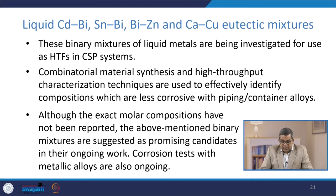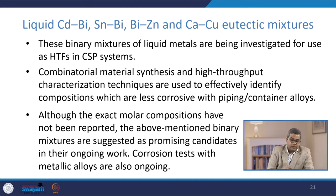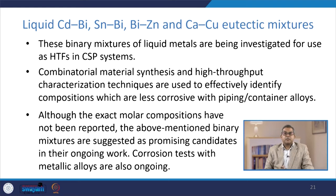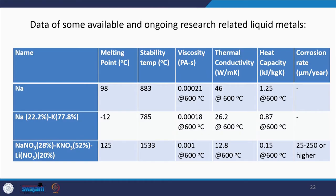There are many other mixtures available, such as cadmium-bismuth, strontium-bismuth, bismuth-zinc, and calcium-copper eutectic mixtures. These binary mixtures of liquid metals are being investigated for use as heat transfer fluids in concentrated solar power systems. Combinational material synthesis and high-throughput characterization techniques are used to effectively identify compositions that are less corrosive with the piping and container systems. Although exact molar compositions have not been reported, these binary mixtures are suggested as promising candidates, and corrosion tests with metallic alloys are also ongoing.